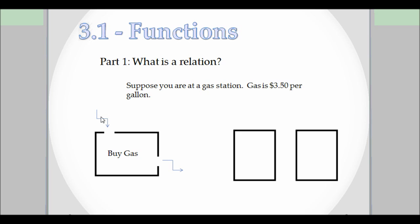So that's what a relation is. In this example it's buying gas. So what we're going to do is say the number of gallons, and then when you buy the gas, out comes the cost.